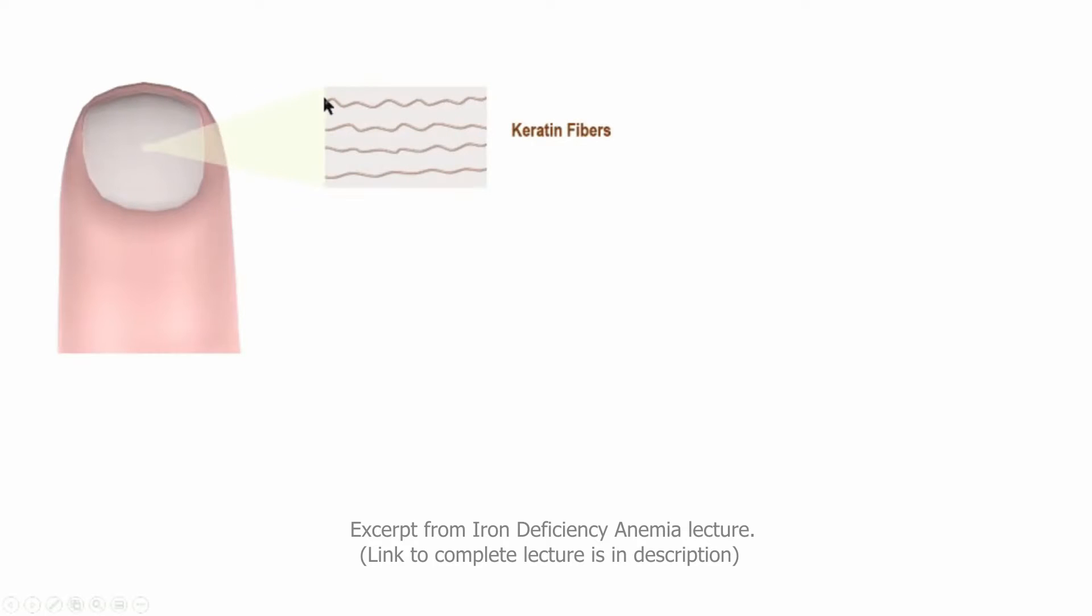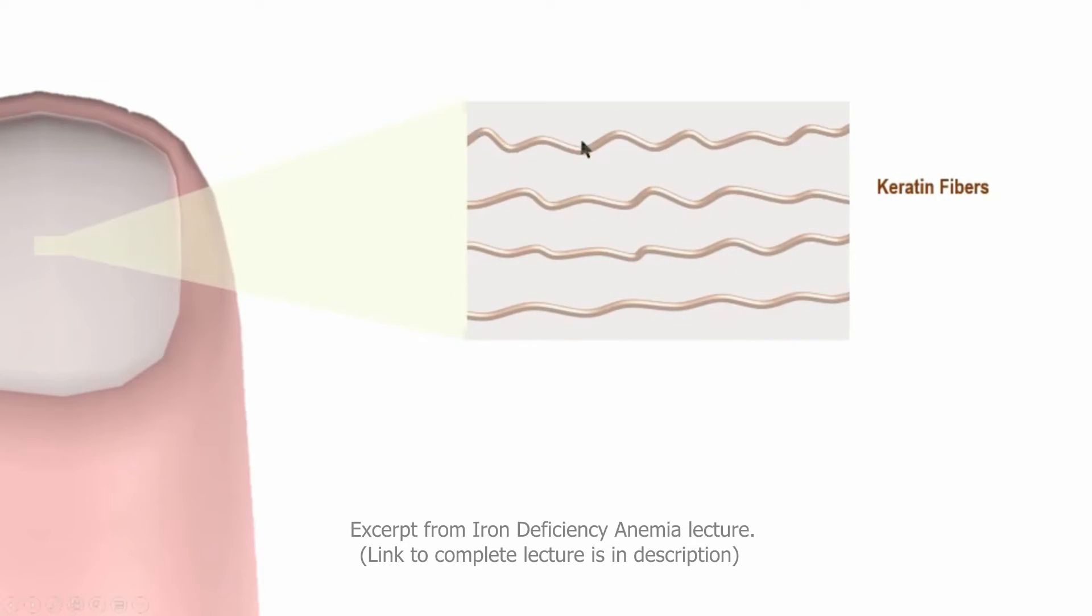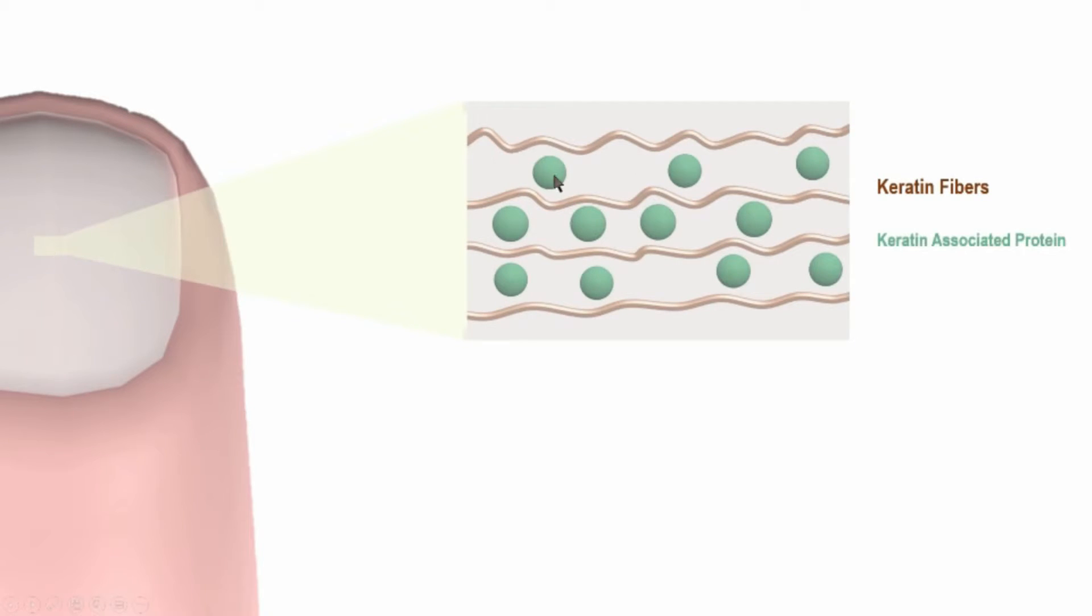Nail plate consists of fibrous keratin proteins arranged parallel to its transverse axis. In between these keratin fibers are non-fibrous globular proteins called keratin-associated proteins which hold together the keratin fibers. They act as a glue.